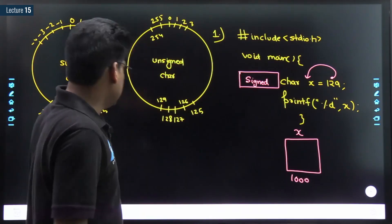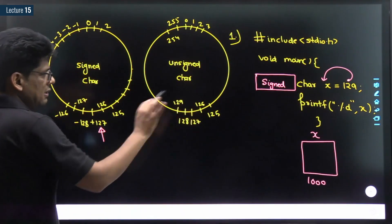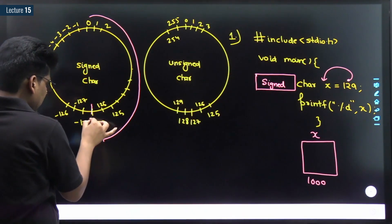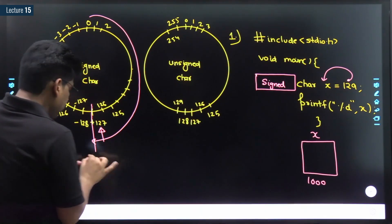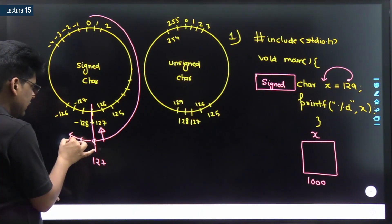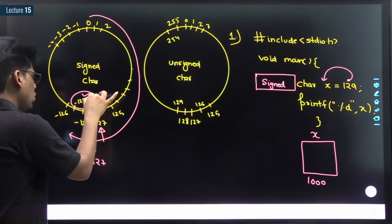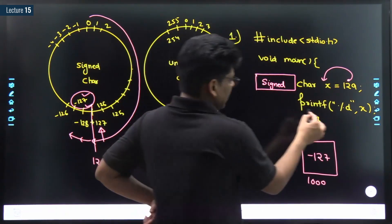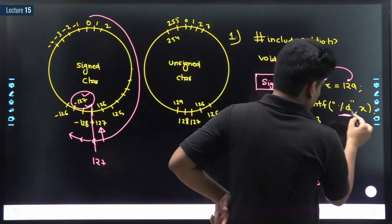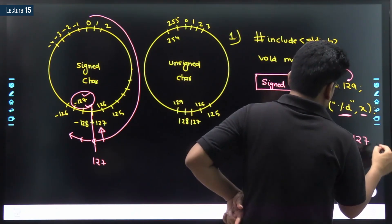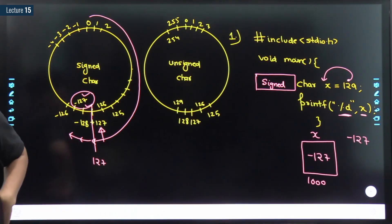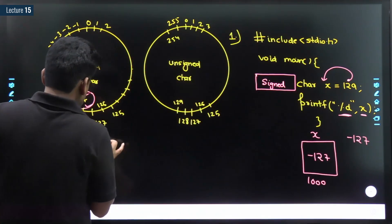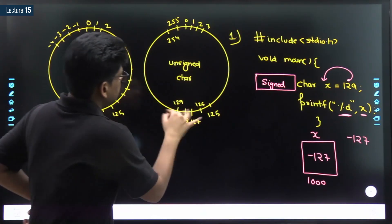Then what — is it an error? No. Try to understand. Because our number is positive, we will move clockwise. Till 127, we have covered 127 numbers, but our number is 2 more than this. So we move 1 and 2 more positions — that means what will be stored inside x is minus 127. Coming to printf with percentage d — integer value — the output is minus 127. Please note it down and think for a moment.